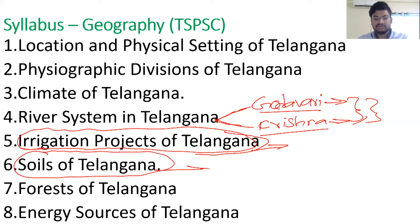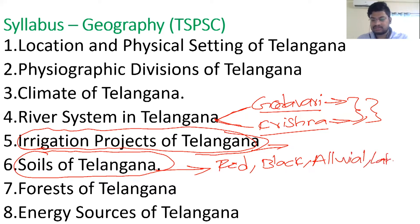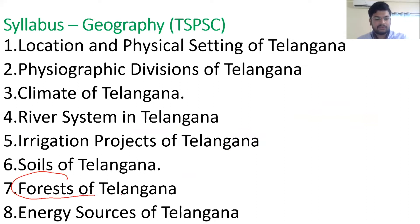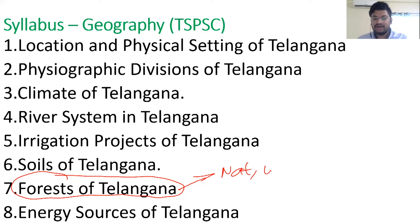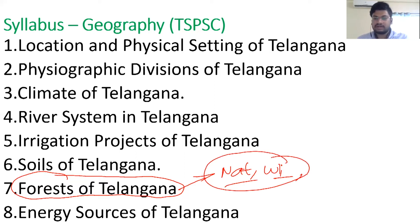The sixth chapter covers the soils of Telangana. Focus on the types of soil and the percentage of area covered by each — red soils, black soils, alluvial soils, and laterite soils. The seventh chapter is about forests of Telangana: the percentage of forest cover, the highest and lowest forest-covered districts, and focus on national parks, wildlife sanctuaries, and biodiversity.